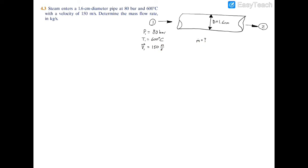To find the mass flow rate, we're going to use the relation m dot equals velocity times area divided by specific volume.